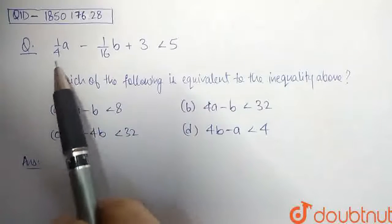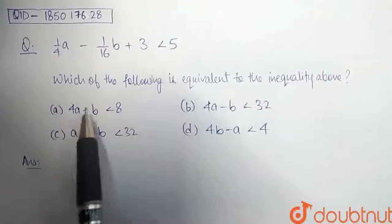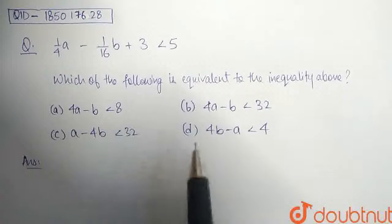In the question, we have an inequality: 1 by 4a minus 1 by 16b plus 3 is less than 5. Which of the following is equivalent to the inequality above? And then we have 4 inequalities as the options.